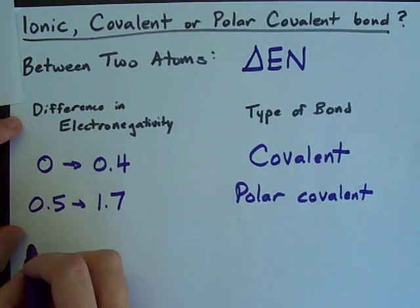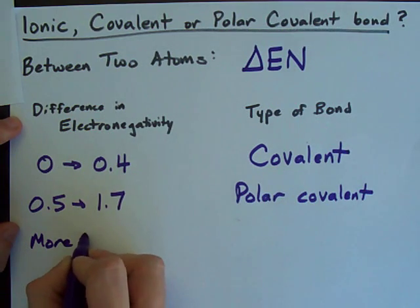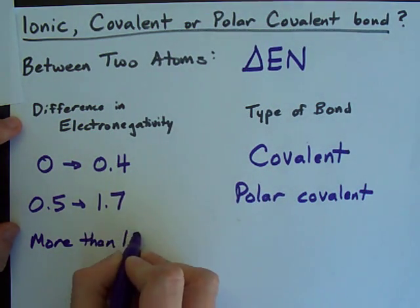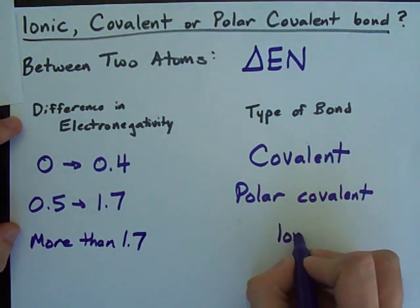And if the difference in electronegativity is more than 1.7, that's when we have what we call ionic bonds.